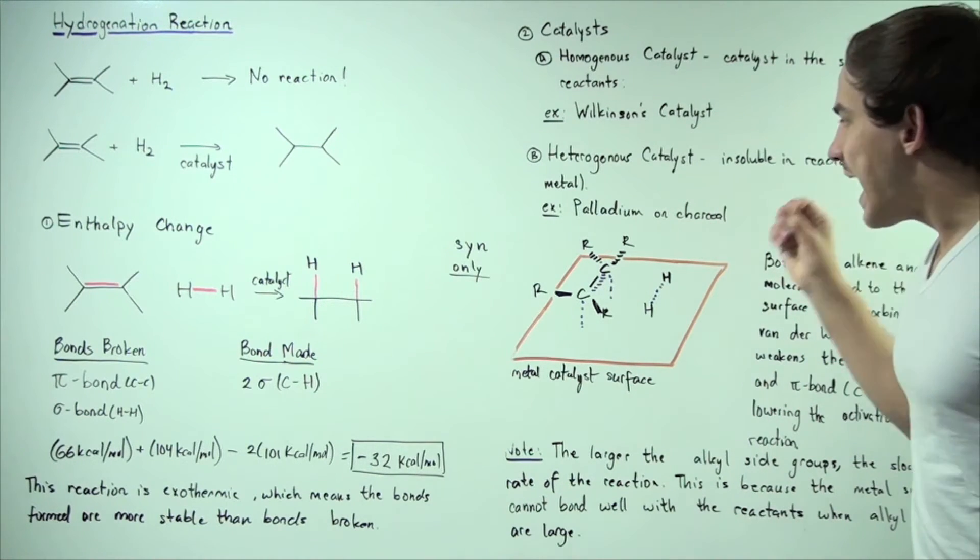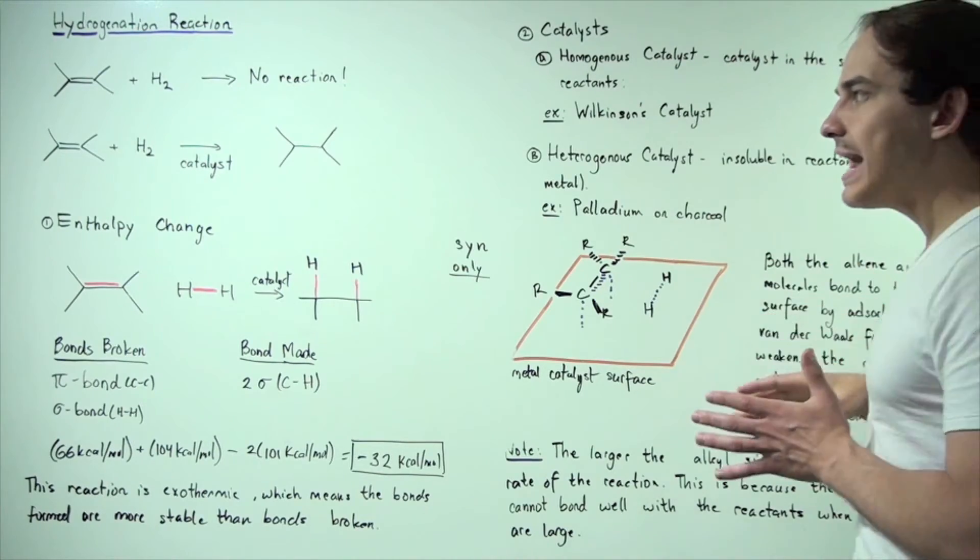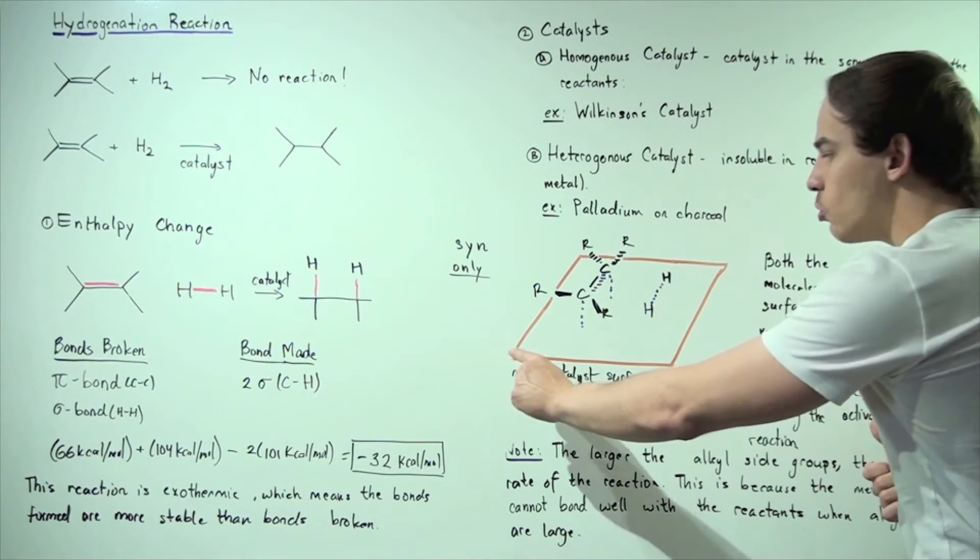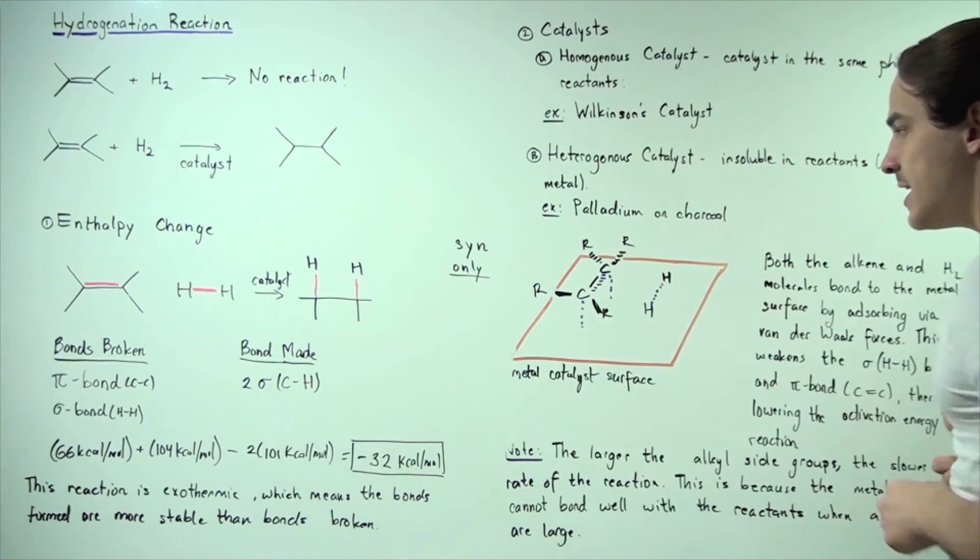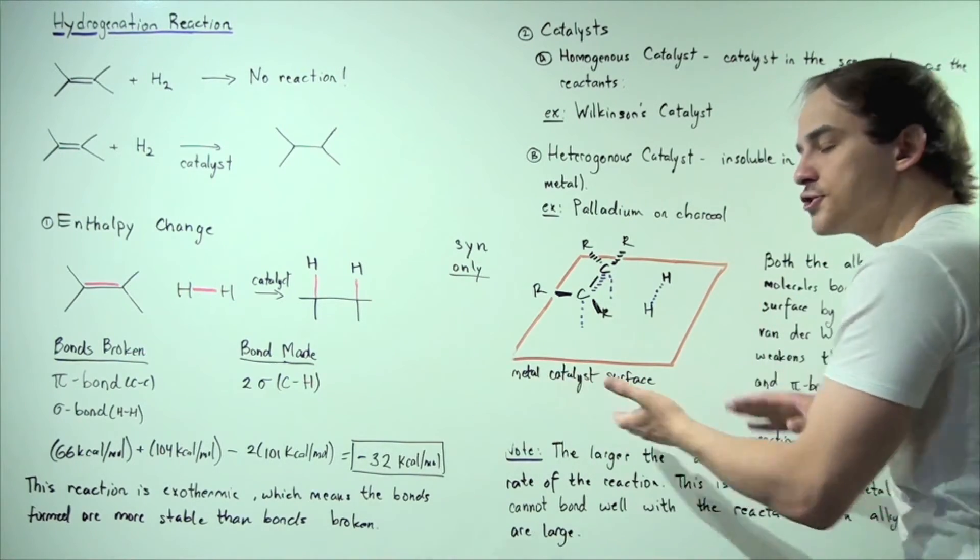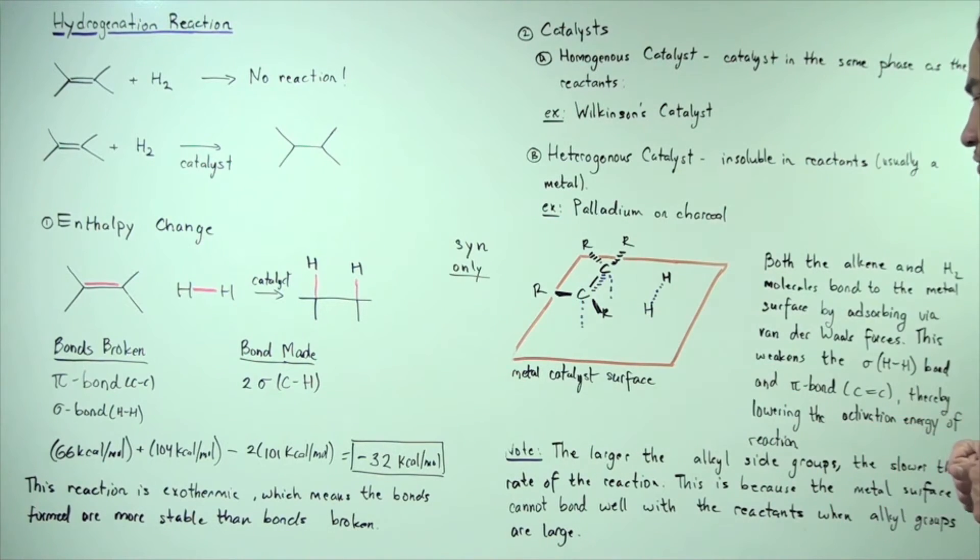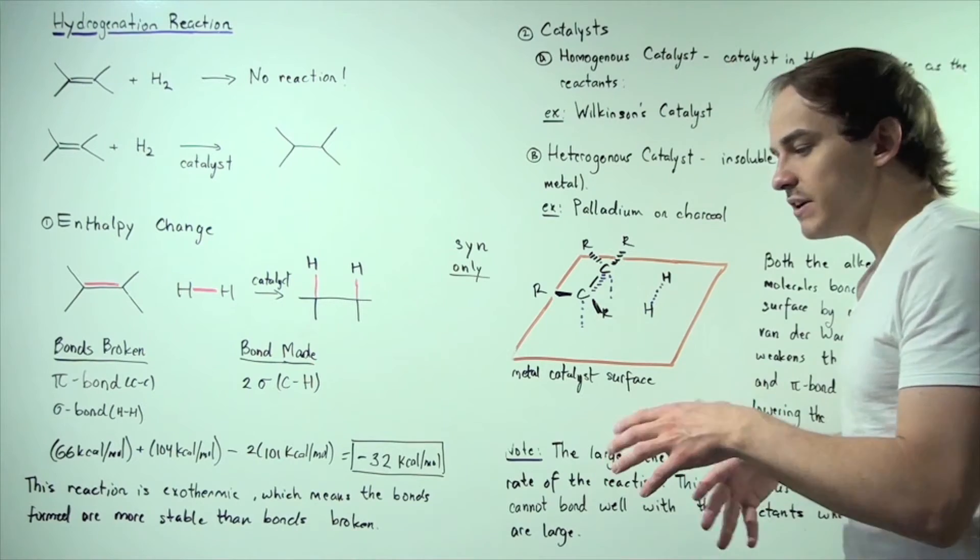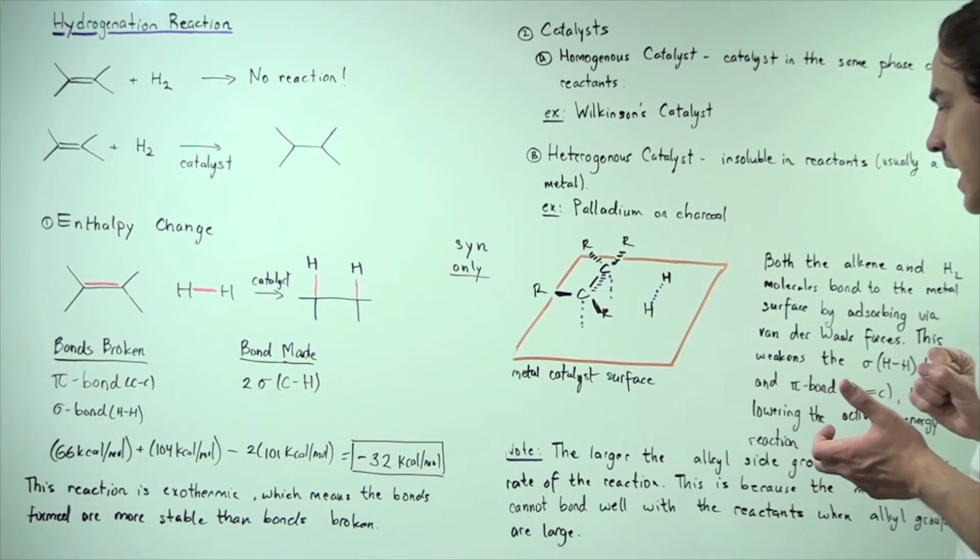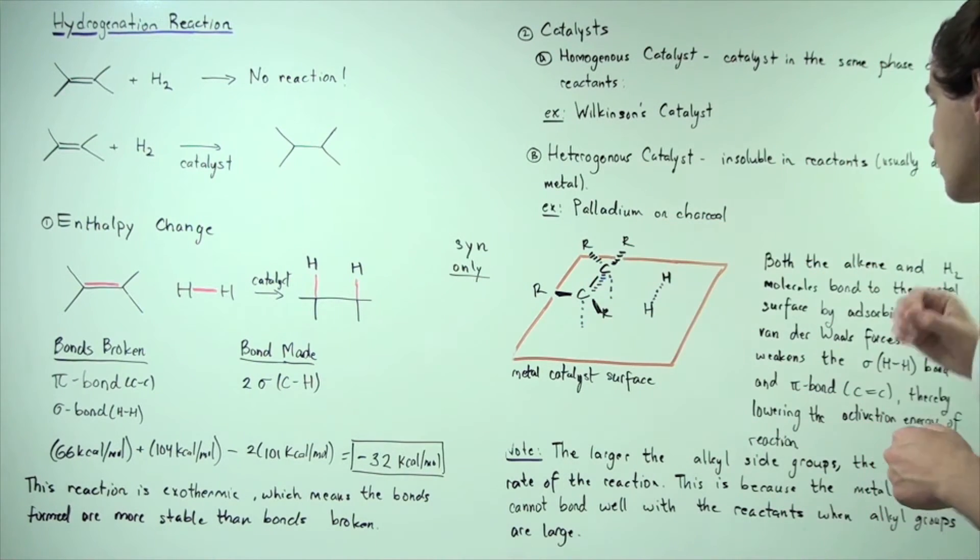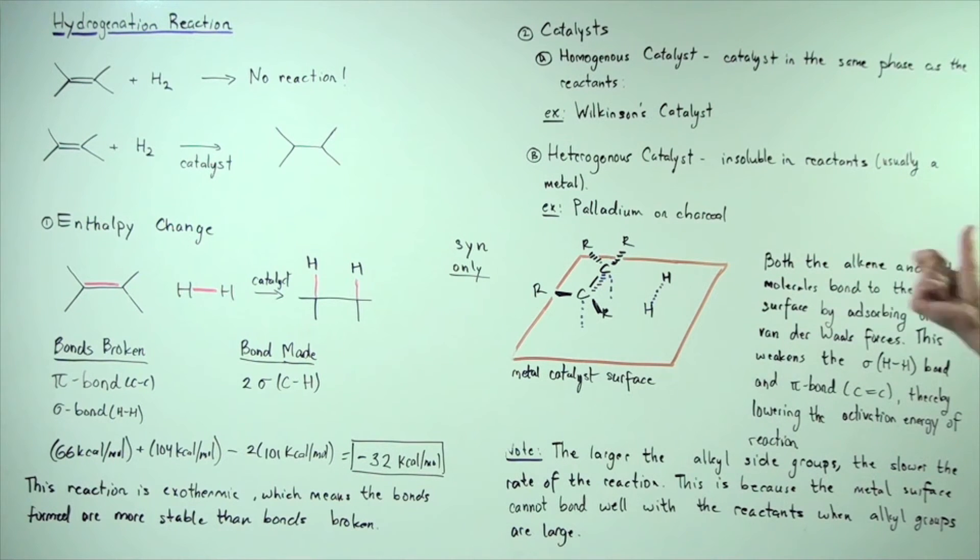Now, what actually happens between the catalysts and our two reactants is the following. So we have a metallic, a metal catalyst shown by this orange section here. And this orange section is the metal surface. It's the metallic catalyst surface of our catalyst. And what happens is there's a type of interaction, absorption taking place between this carbon, this HH bond and the carbon-carbon double bond. So, both the alkene and the H2 molecules bond to the metal surface by absorbing via van der Waal forces.